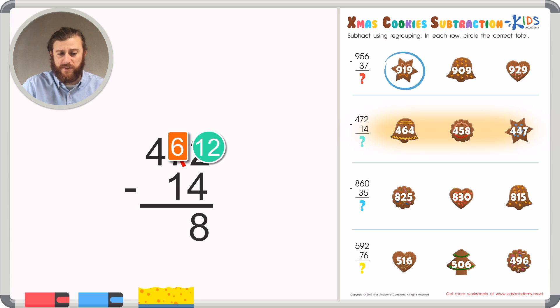6 minus 1 is 5. That's an easy subtraction problem. And 4 minus nothing is 4. Giving us a total, or a difference, of 458. The second answer choice.